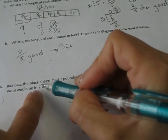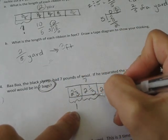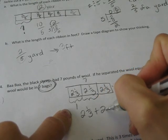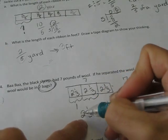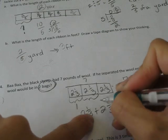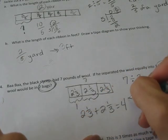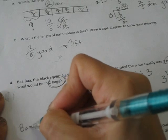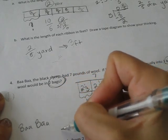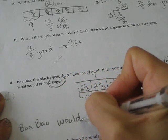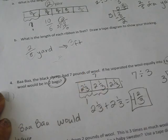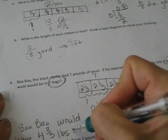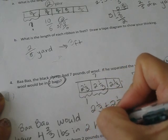So he has 2 and 1 thirds in one bag. But they want to know how much would be in 2 bags. So that means I would take both of these. 2 and 1 thirds plus 2 and 1 thirds and that would give me the answer. So that's 4 and 1 thirds plus 1 thirds is 2 thirds. So Baa Baa would have 4 and 2 thirds pounds in 2 bags.